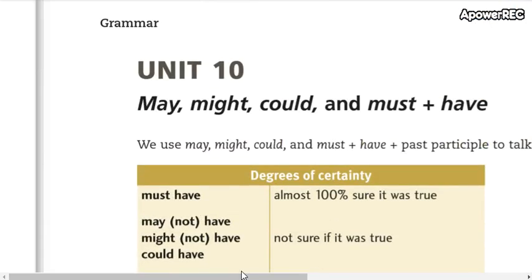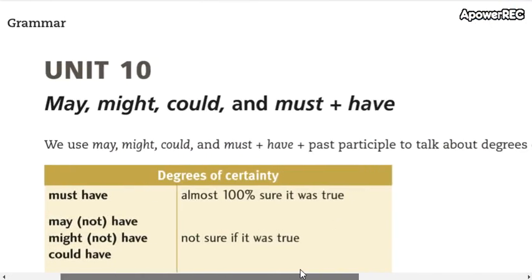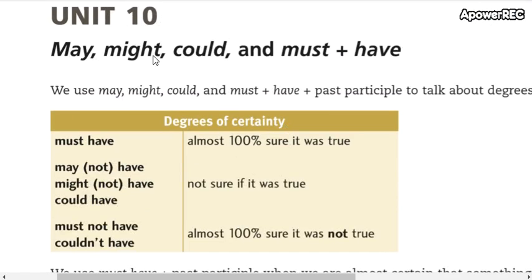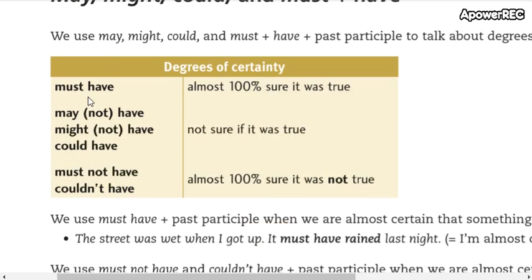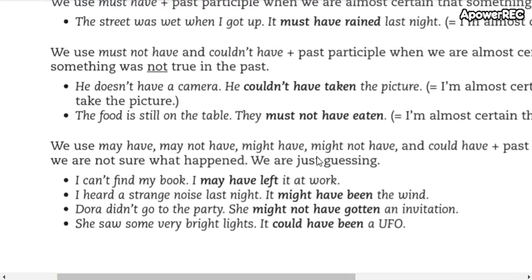Well, here we have a summary of may, might, could and must. All these modals plus have. So here we have the degrees of certainty. We already did this on the PowerPoint slides, and you have here other examples.